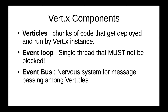The Event Bus allows communication not just within a single machine but also across a cluster of machines, sending messages among verticles. By default, when Vert.x runs, it detects the number of CPU cores and creates event loops equal to the number of cores multiplied by two. For example, if you have four cores, you'll have eight event loops.